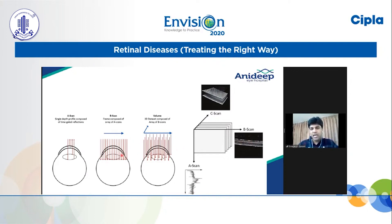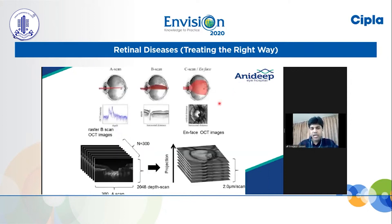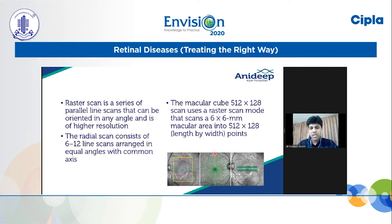Once this B-scan is arranged in a stack, we get a volume identification of that particular tissue structure, also called a C-scan. When we look at the C-scan from the top, we get the en-face image of that particular area. So when we stack up the A-scans we get a B-scan, and when we stack up the B-scans and look from the top, we get what is called an en-face OCT image, which is also important in the interpretation of these diseases.